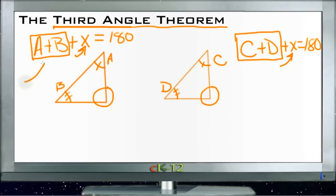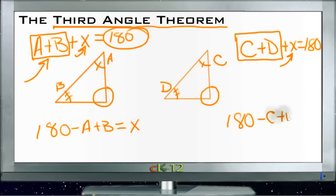Because if I take this same amount, A plus B, away from 180, I get 180 minus A plus B equals X, and 180 minus C plus D equals X. In other words, I take my total of 180 and take away these two added together, what's left is X. And if I take 180 and take away these other two added together, what's left is X.